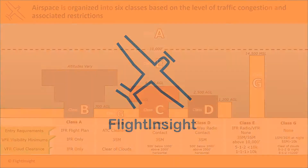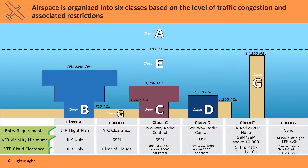Airspace in the United States is broken up into six classes: A, B, C, D, E, and G, based on traffic congestion. Each class carries restrictions like what's needed to enter the airspace and what minimum weather conditions must be maintained for VFR flight.